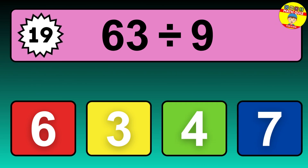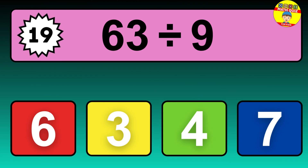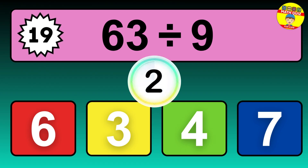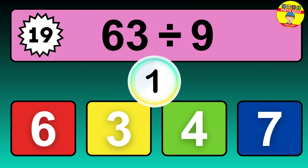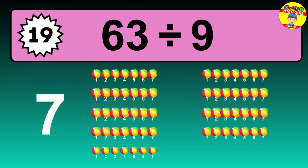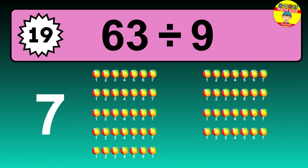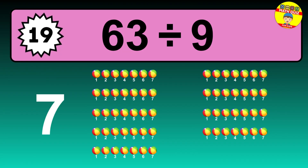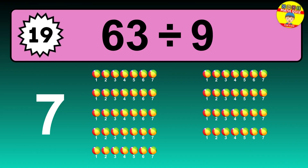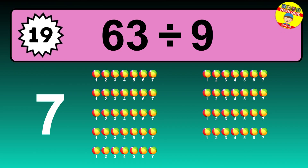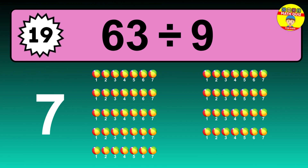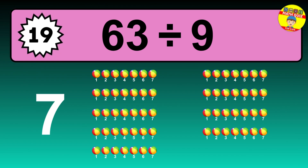63 divided by 9. It's time to think. Let's go to the solution. Divide the number 63 by 9. Each group contains 9 units, so dividing 63 by 9 results in 7 equal groups. Thus, 63 divided by 9 equals 7.